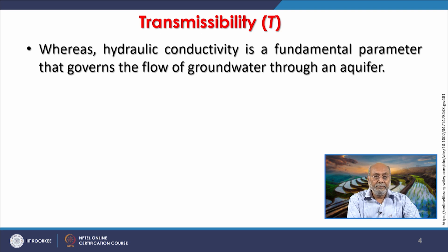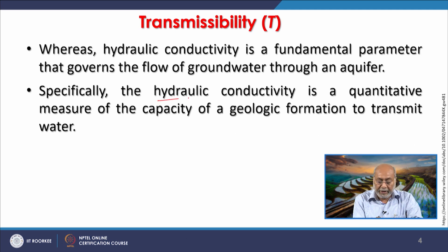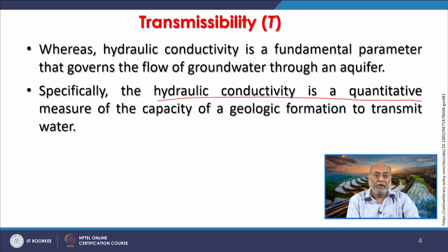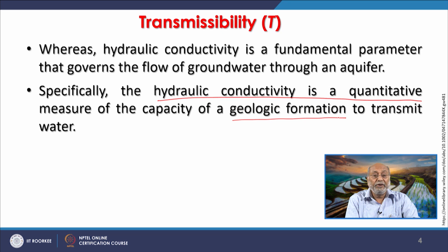Hydraulic conductivity K is a fundamental parameter governing groundwater flow through an aquifer. Specifically, it is a quantitative measure of the capacity of a geologic formation to transmit water. Comparing sedimentary rocks with igneous or metamorphic rocks, the geologic formation changes its capacity, which affects hydraulic conductivity and consequently transmissibility.